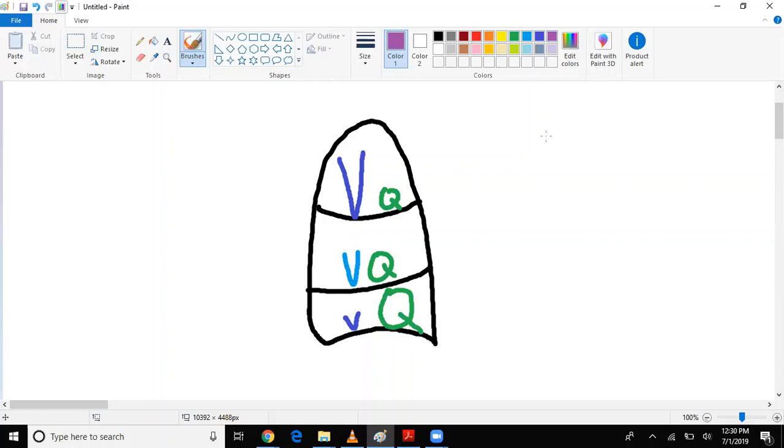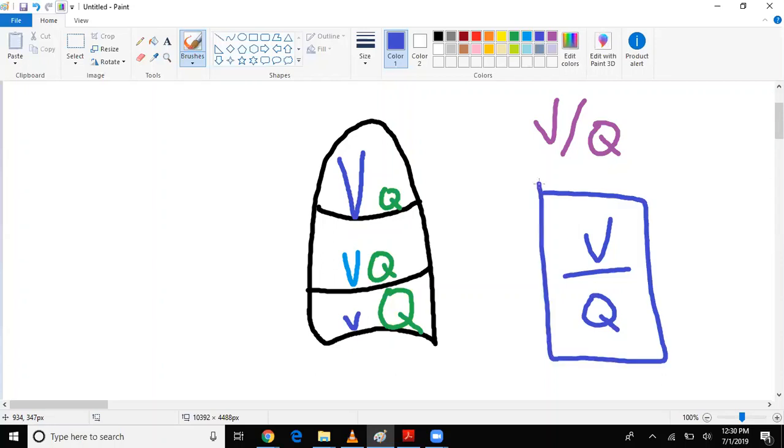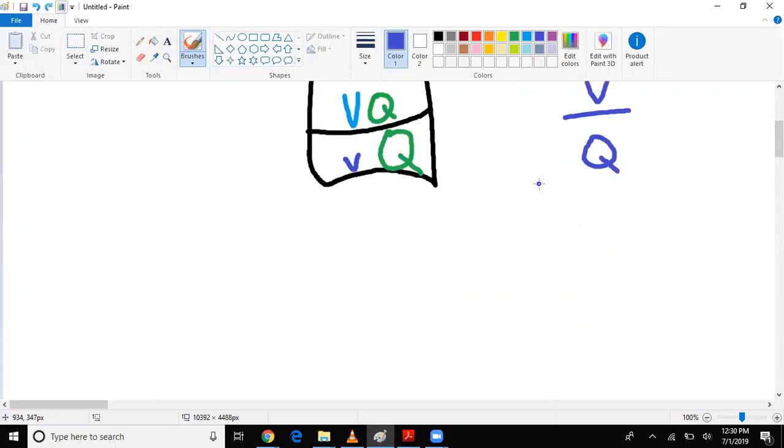I would like for you to see it this way: V over Q. Now, this type of equation tends to pop up often, especially in respiratory. So what I'd like for you to see is, look at it this way: x over y equals 1.